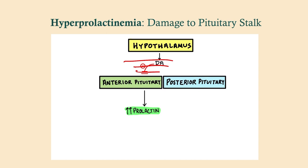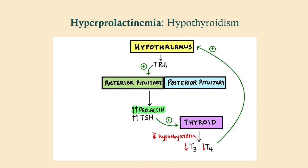How does hypothyroidism cause hyperprolactinemia? In primary hypothyroidism, such as Hashimoto's, there is a reduction in T3 and T4. Low thyroid hormone removes negative feedback on the hypothalamus, so TRH rises. TRH not only stimulates TSH release at the anterior pituitary, but also stimulates prolactin release. So high TRH leads to both high TSH and high prolactin.